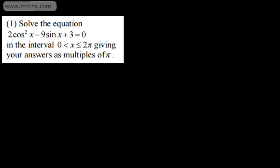In this video, we're going to do some exam-style questions on trigonometry. In question number 1, we're asked to solve the equation 2cos²x - 9sinx + 3 = 0 in the interval for x between 0 and 2π radians, giving our answers as multiples of π.